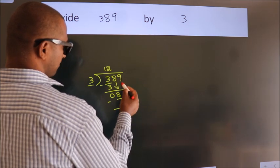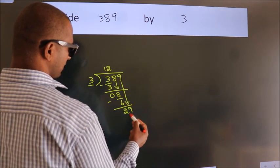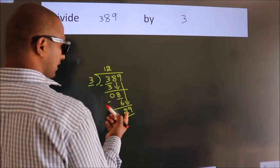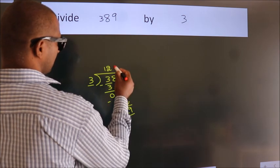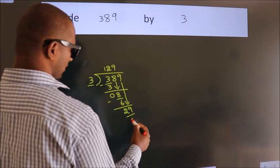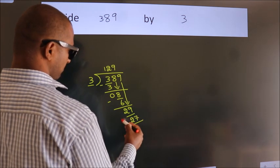After this, bring down the next number: 9. So we have 29. A number close to 29 in the 3 table is 3 nines, which is 27. Now we subtract.